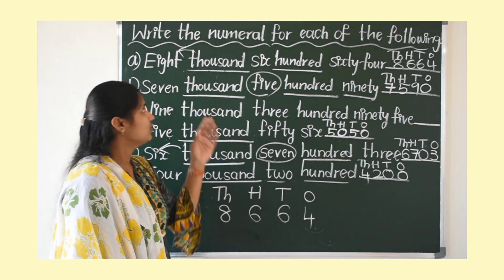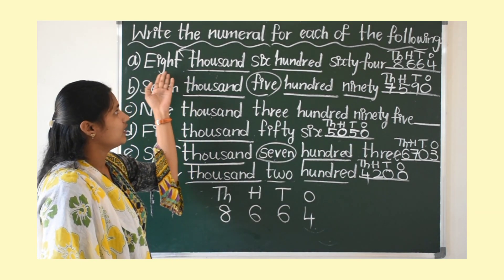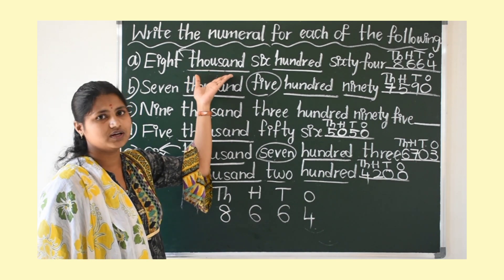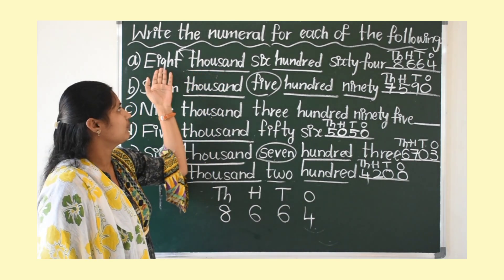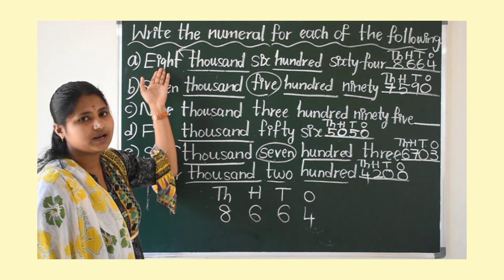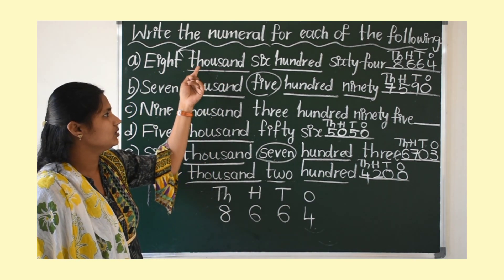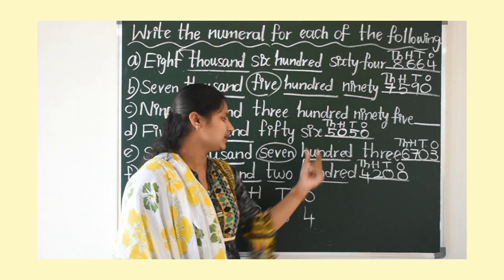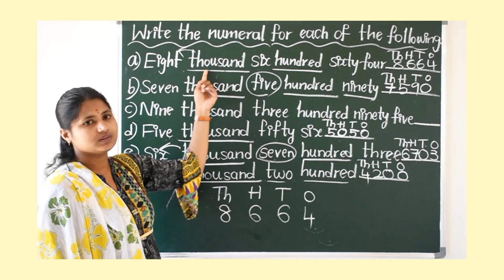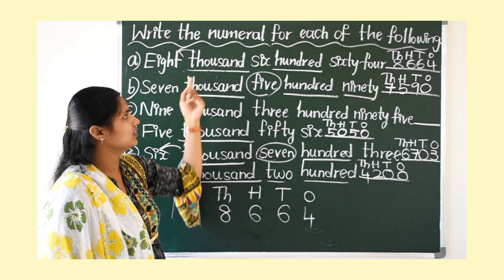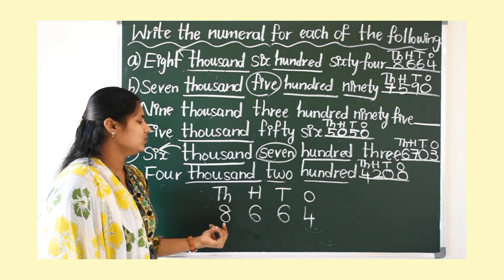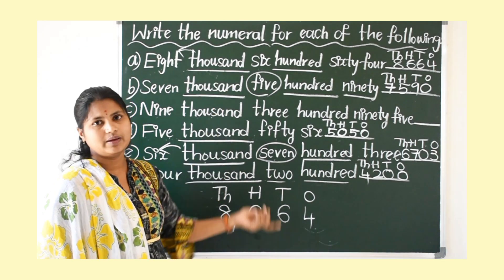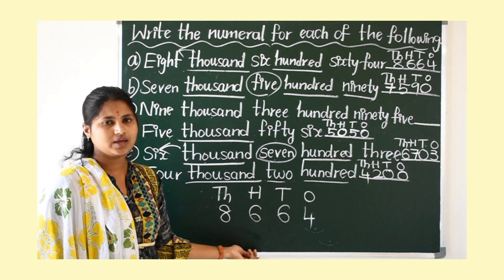How did you understand, children? Whatever the number name is, first see which place value the number name started with. Then write out the place values up to that. After that, write down the digits by reading the number name.